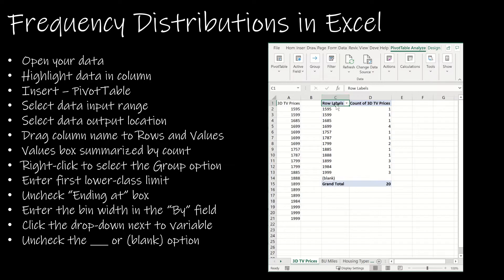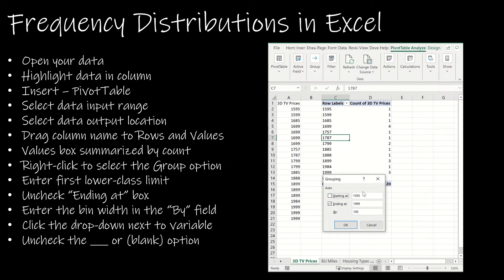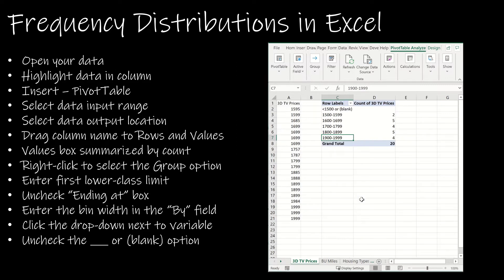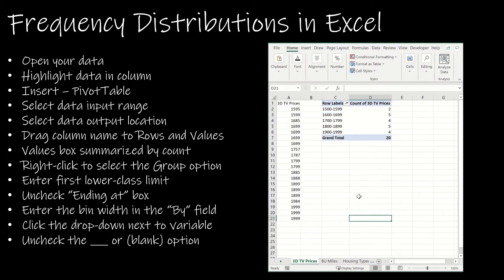After clicking OK, I have a frequency distribution, but it lists each individual price rather than grouped classes. To fix this, I right-click any value in the left column and choose Group. I enter the starting value and the class width of 100, then click OK. Now it looks much better, but there's an unwanted blank row. I click the down arrow to filter and remove that blank, and now the table looks exactly like what we did by hand — just neater.